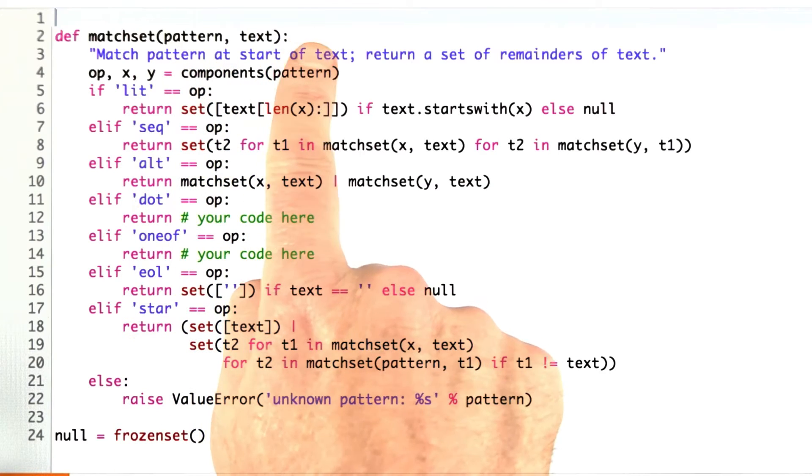We take a pattern and a text. We're breaking down the pattern into its components. The components are an operator and then an x and a y part, depending on the definition.